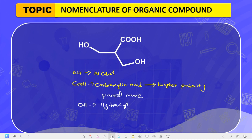Having identified the substituent and the functional group with highest priority, we start numbering. The numbering should begin from the end bearing the highest priority group — in this case, the carboxylic group takes number one. The longest continuous chain gives us carbon two and carbon three. Whether you number to one side or the other it will be the same.